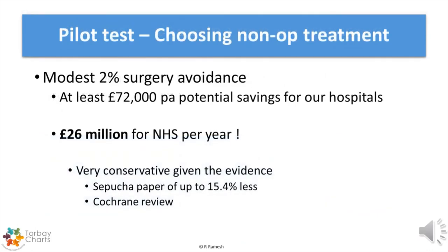Considering a modest 2% surgery avoidance, we could save at least £72,000 per year in our hospital. Translating this to the NJR figures, there is a potential saving of at least £26 million per year for the NHS. This is a conservative estimate, as much higher figures for surgery avoidance are quoted in the published literature.